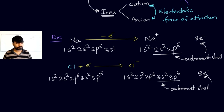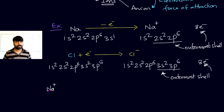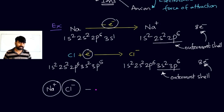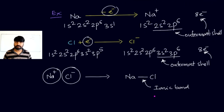Sodium is a stable cation and Cl⁻ is a stable anion. The electron from sodium is transferred to chlorine. This transfer produces a cation and an anion, which attract each other by electrostatic force of attraction, and Na and Cl become bonded. This bond is called an ionic bond.